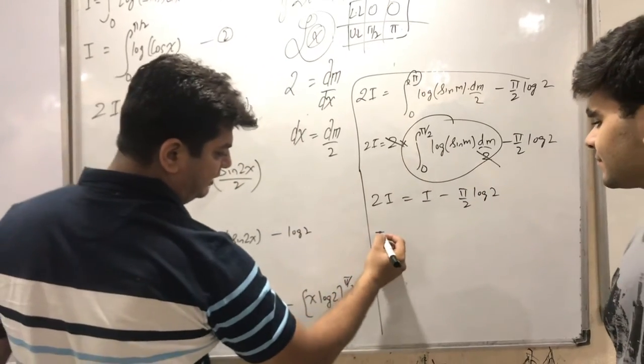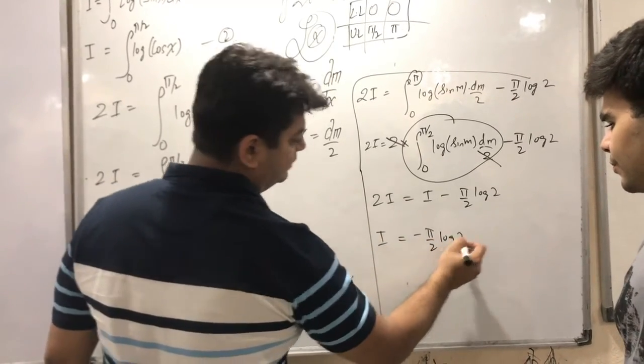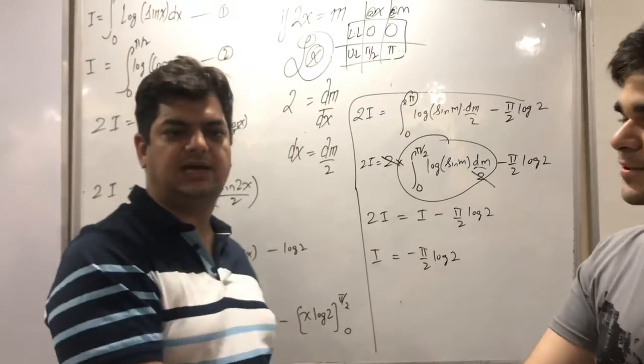So, if I bring in i here, I will be having 2i minus i is i equals minus pi by 2 log 2. Hope you understood, sir. Thank you so very much. Thank you, sir. Let's work hard.